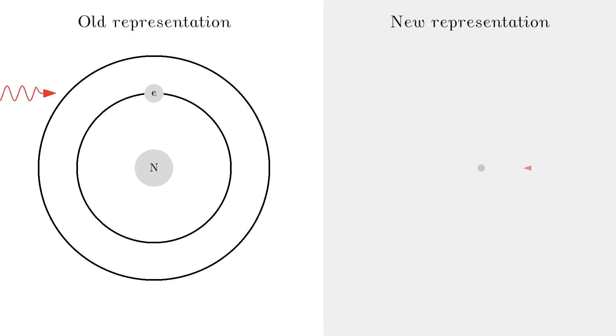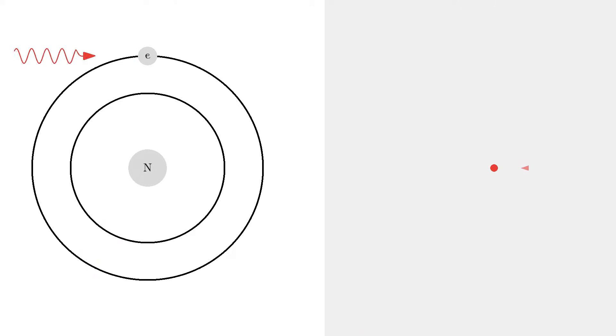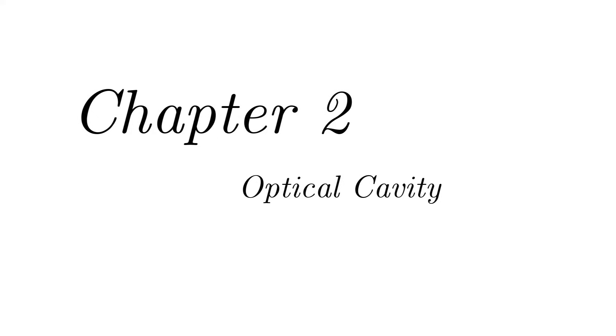I'll later need to draw many atoms clumped together and photons on top of each other, so let's simplify the visualization. Instead of the full atom diagram, I'll show the photon as a small arrow and the atom as a gray circle. The atom is red when it's in an excited state. To exploit the stimulated emission process, let's make what's called an optical cavity — a cylinder with mirrors on the side. When photons hit the mirror, they change direction. When they hit the outer wall, which is just glass, they exit the cylinder.